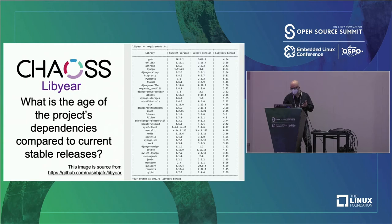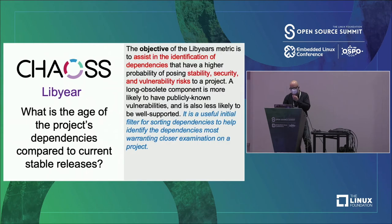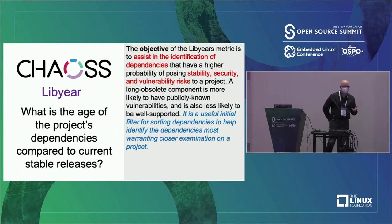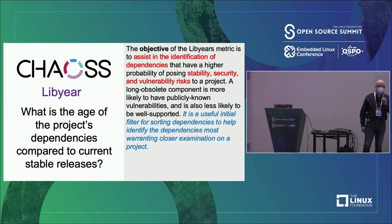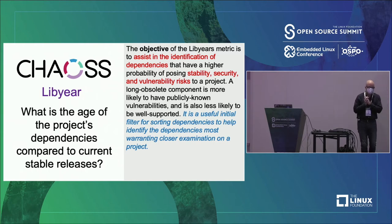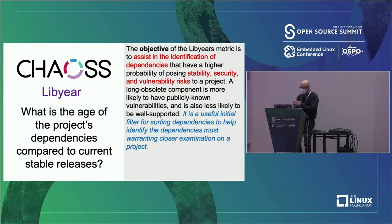The age of a project's dependencies: here's an example from a website that calculates LibYears for Python — it tells you the current version, the latest version, and how many LibYears behind it is, so you can see it by dependency. The objective of this metric is to help you identify dependencies with a higher probability of posing some risk or vulnerability. The heuristic is: the older the dependency, the more likely it is to pose a risk to the project. It's a place to start.